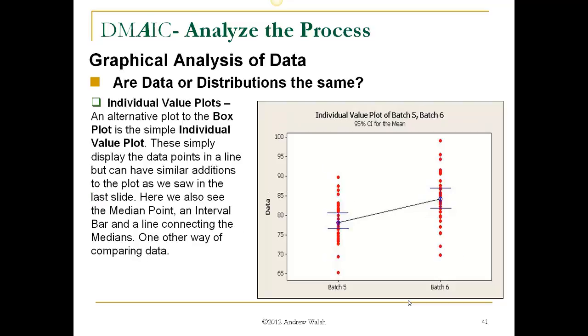Individual value plots. An alternative plot to the box plot is a simple individual value plot. These simply display the data points in a line, but can have similar additions to the line as we saw on the last slide. Here we also see the median point, an interval bar, and a line connecting the medians. One other way of pairing the data.